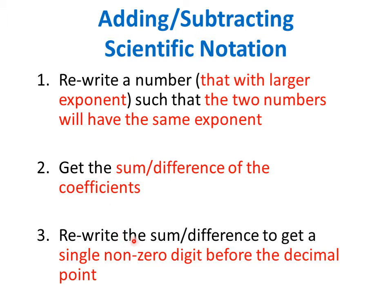Now, if the sum or difference has a zero before the decimal point, or has more than one digit before the decimal point, we have to rewrite that sum or difference to get a single non-zero digit before the decimal point.